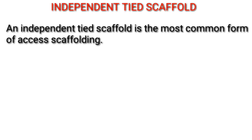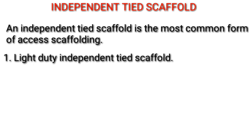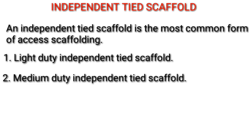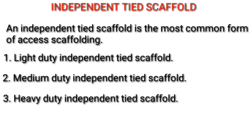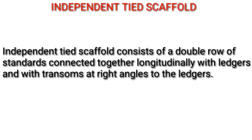An independent tied scaffold is the most common form of access scaffolding. Types include: 1. Light duty independent tied scaffold. 2. Medium duty independent tied scaffold. 3. Heavy duty independent tied scaffold. An independent tied scaffold consists of a double row of standards connected together longitudinally with ledgers and with transoms at right angles to the ledgers.